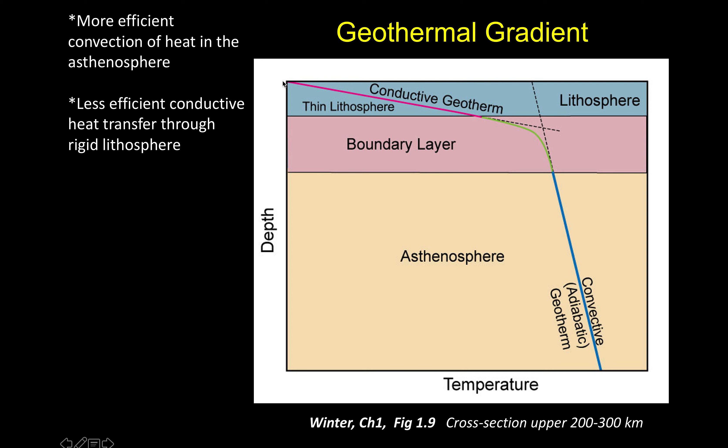We don't have any units or measurements on the axes, but depth is increasing downward. The surface is at the top of the blue rectangle and we're well into the asthenosphere part of the mantle when we're in the beige box. Notice that the geotherm is going to change its slope depending on how the heat is moving through the material.